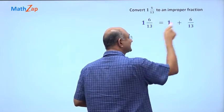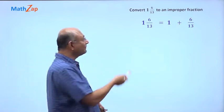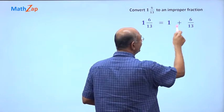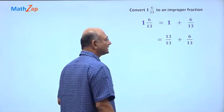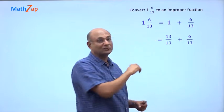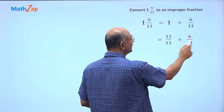It is 1 plus 6 by 13. 1 is 13 by 13. Why will I do that? Because there is a denominator 13, so I will write 1 as 13 by 13. And then this is of course 6 by 13. There are 13 pieces of 1 by 13, and there are 6 pieces of 1 by 13.